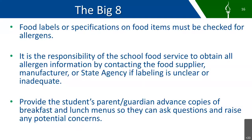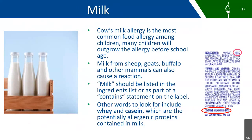The first allergen we're going to talk about is milk. Cow's milk allergy is the most common food allergy among children. Many children will outgrow the allergy before school age. Milk from sheep, goats, buffalo, and other mammals can also cause a reaction. Milk should be listed in the ingredients list or as part of the 'contains' statement on the label. Here's an example of an ingredients list showing milk in the main ingredients and a statement at the bottom: 'contains milk ingredients.' Other words to look for include whey and casein, which are also potentially allergenic proteins contained in milk.